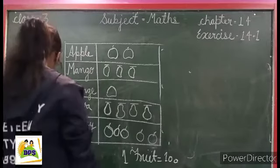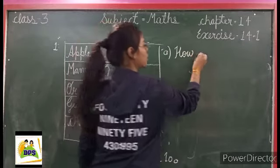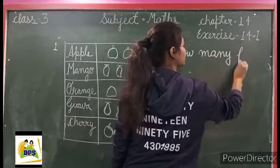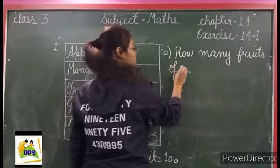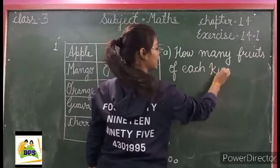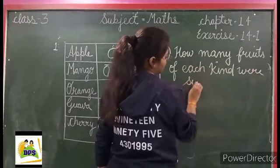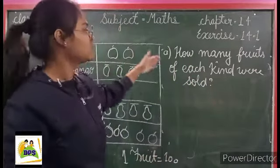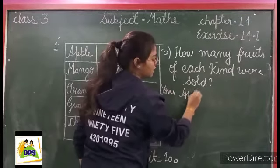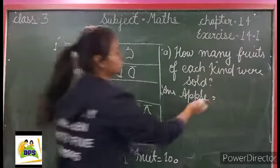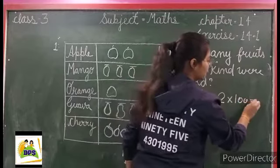First question is how many fruits of each kind were sold? Answer is apple. Apple is the number of two. Each fruit equals 100, so 2 times 100. Apple is 200.